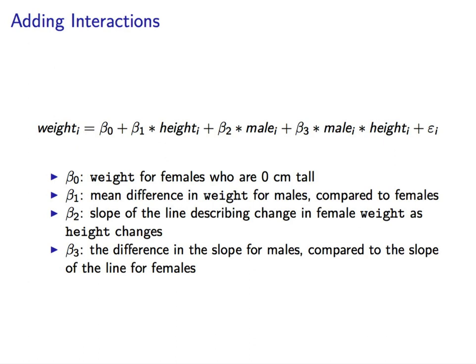Beta 3 is our interaction term, and it represents the difference in the slope for males compared to the slope of the line for females. So if beta 3 is greater than 0, then the slope associated with the change in weight as a function of height will be steeper for males than it is for females.